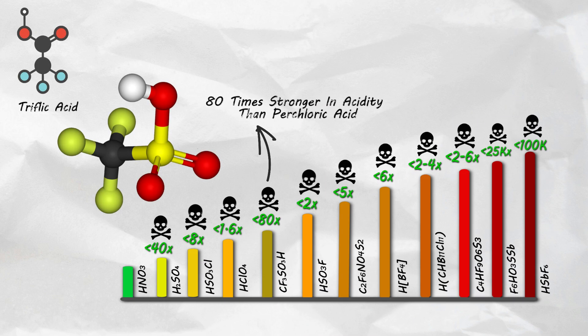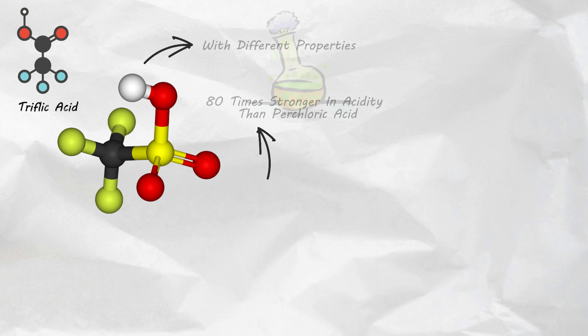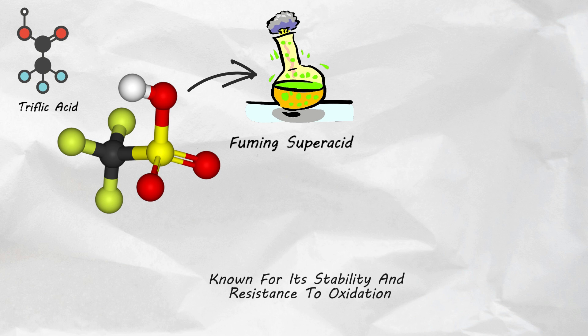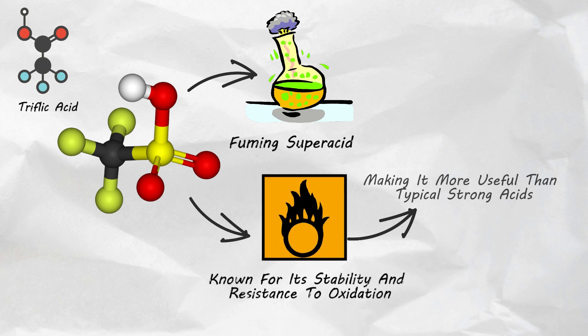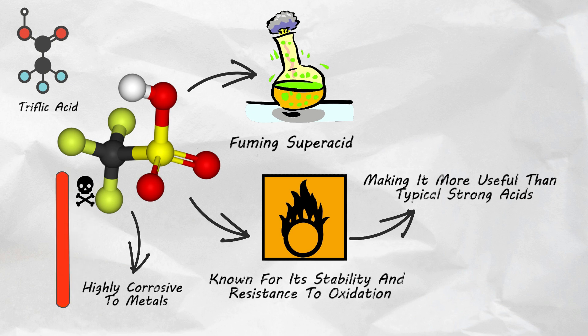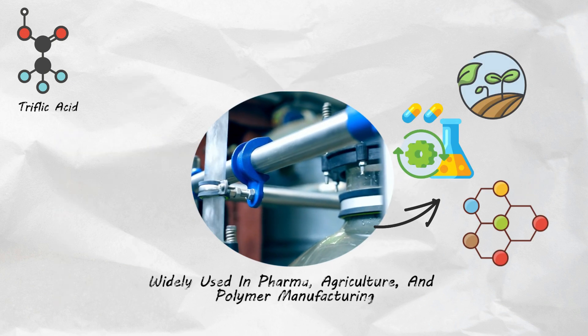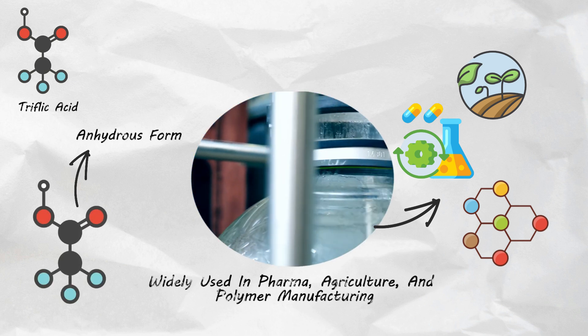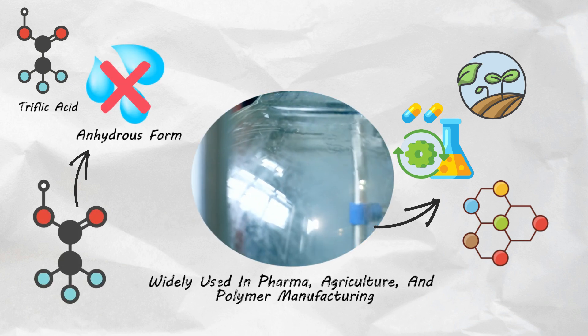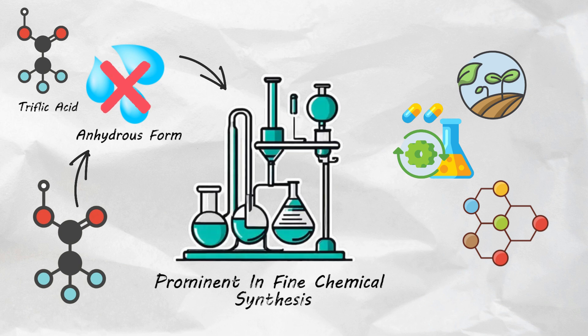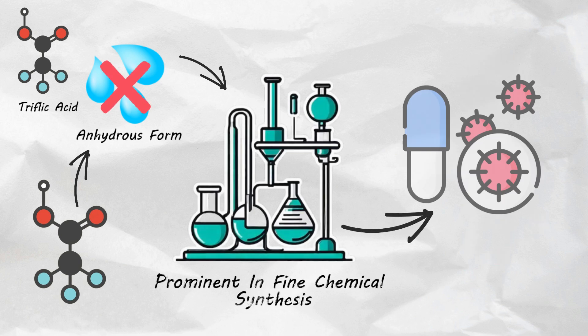Triflic acid. This stuff is approximately 80 times stronger in acidity than perchloric acid, but with different properties. Triflic acid is a fuming superacid that is known for its stability and resistance to oxidation, making it more useful than typical strong acids, but it is still highly corrosive to metals. Widely used in pharmaceutical, agricultural and polymer manufacturing, its anhydrous form, which means completely free from water, is prominent in fine chemical synthesis, particularly in the production of antibiotics.